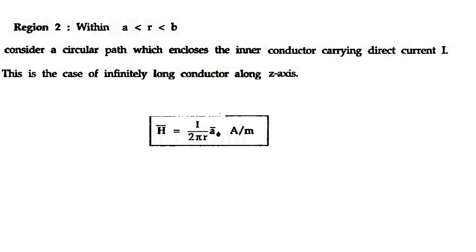Next we see Region 2, which is outside the inner conductor. When outside the inner conductor, it is similar to the magnetic field intensity of a straight conductor along a set axis. As derived previously, for a straight conductor the equation is H = I/(2πR) · A_φ. This is the result for Region 2.